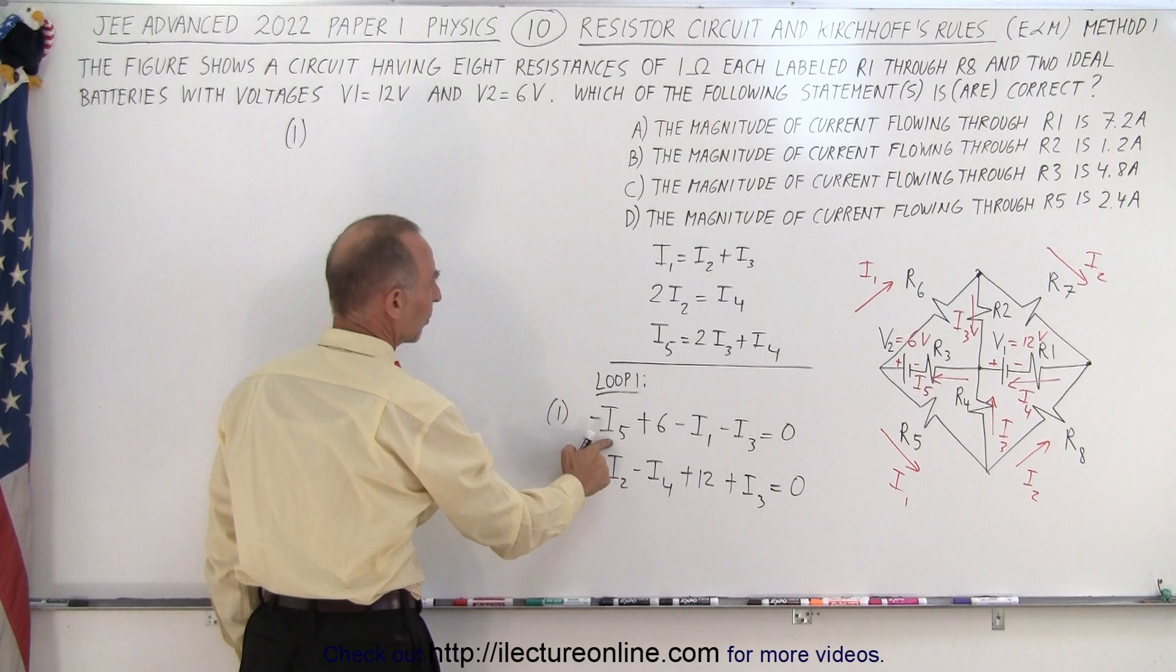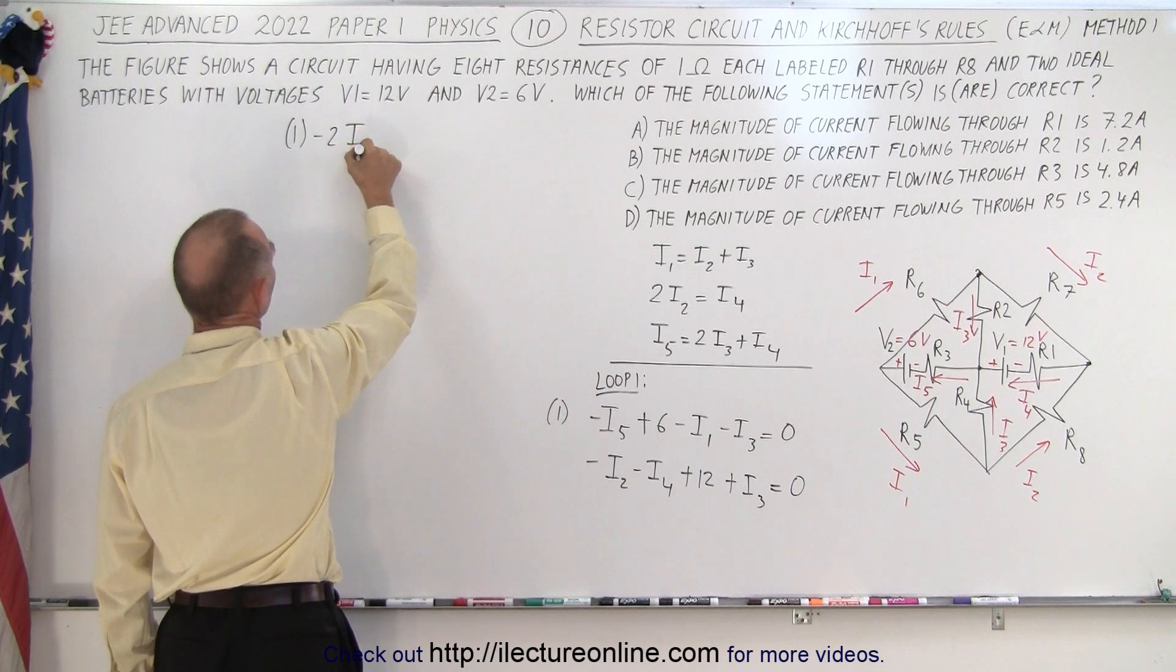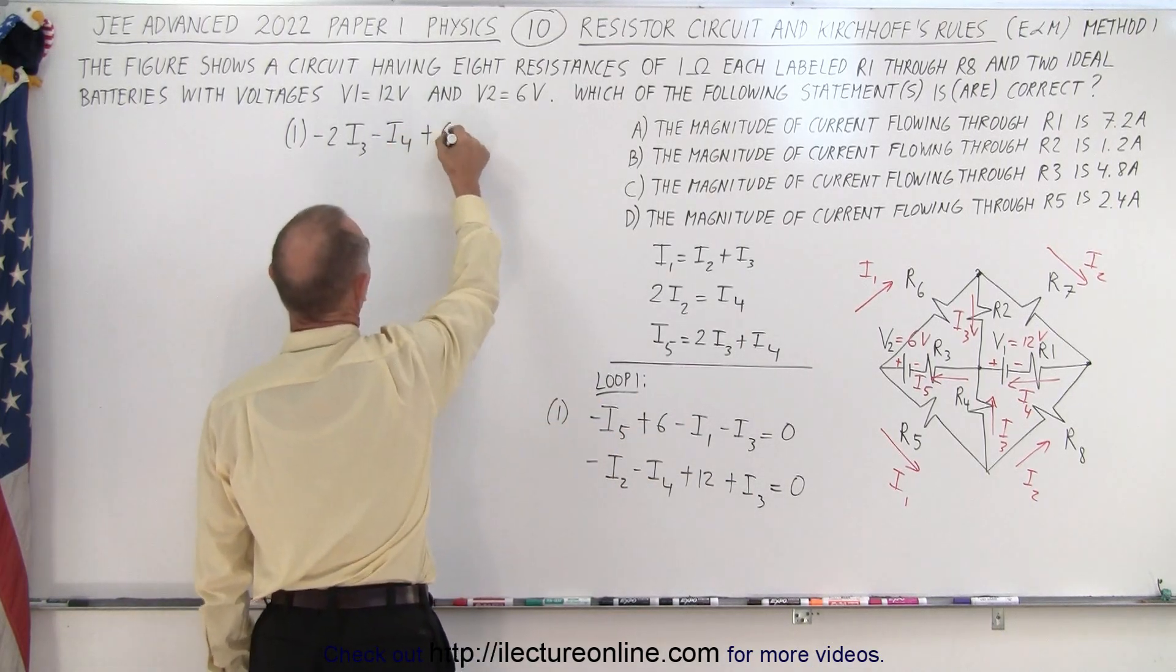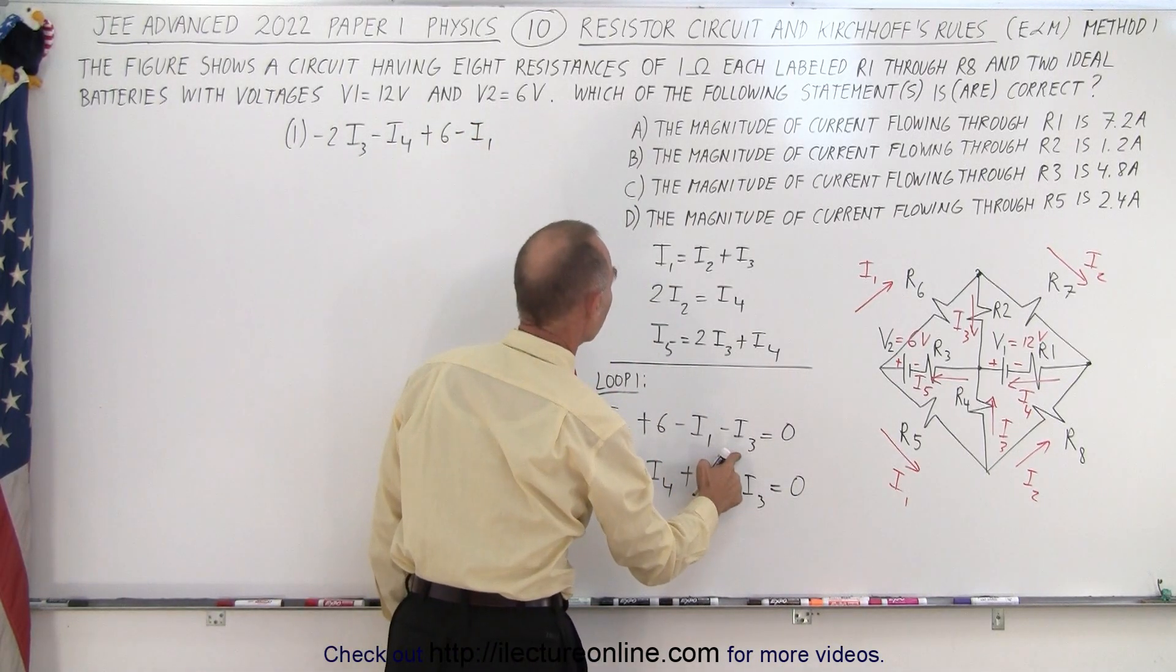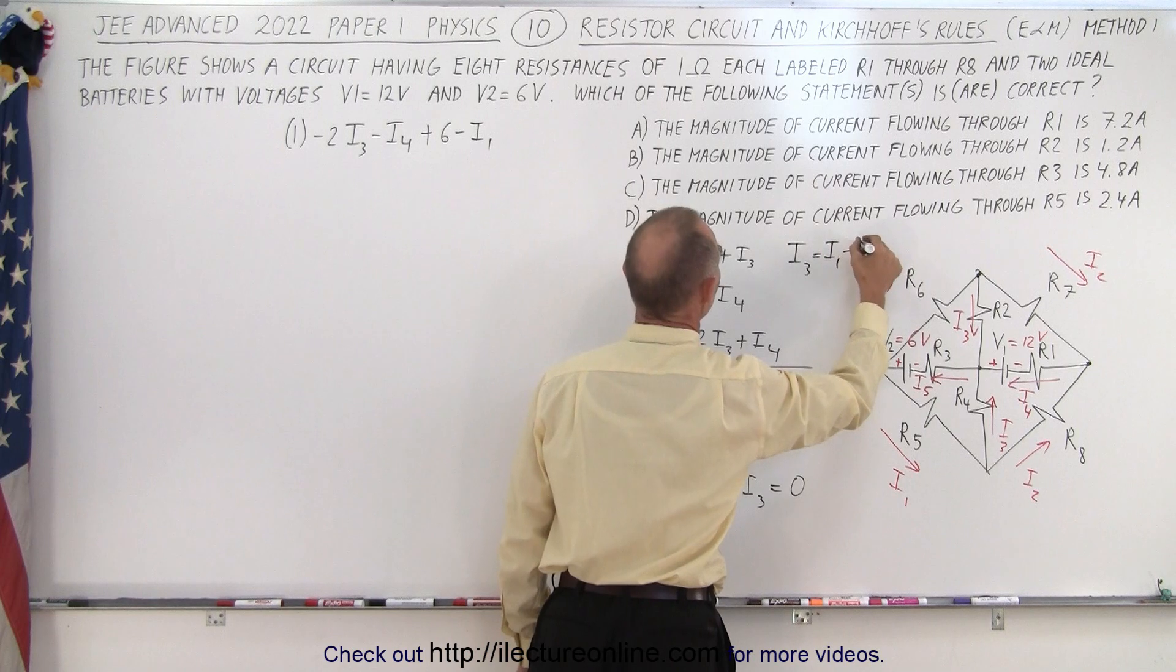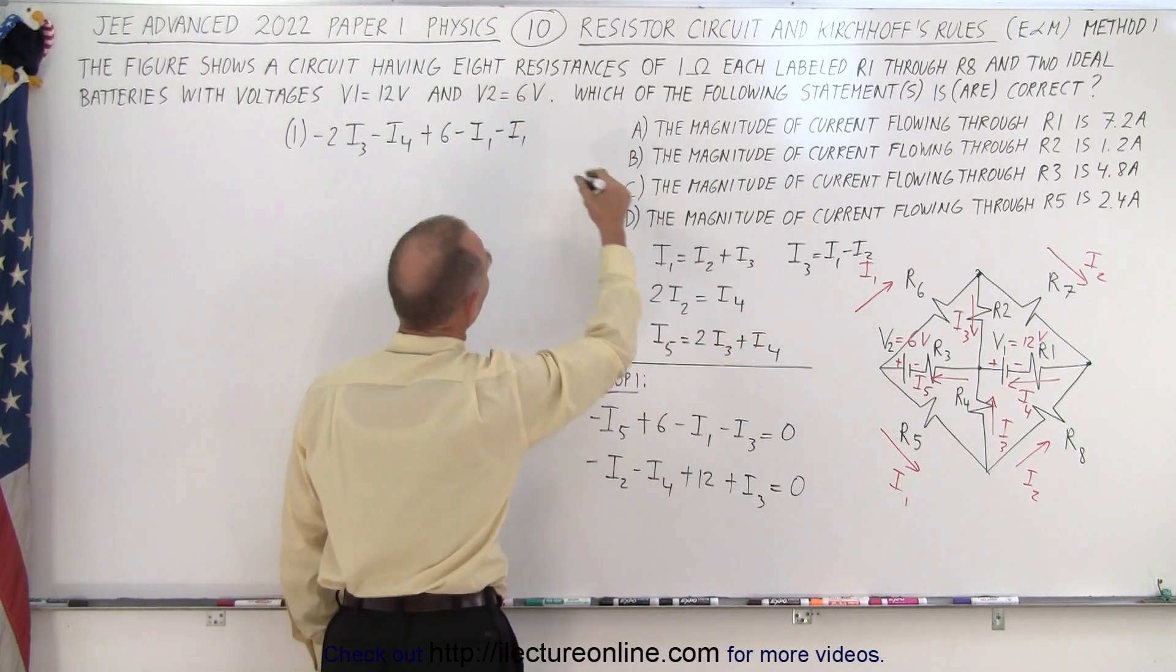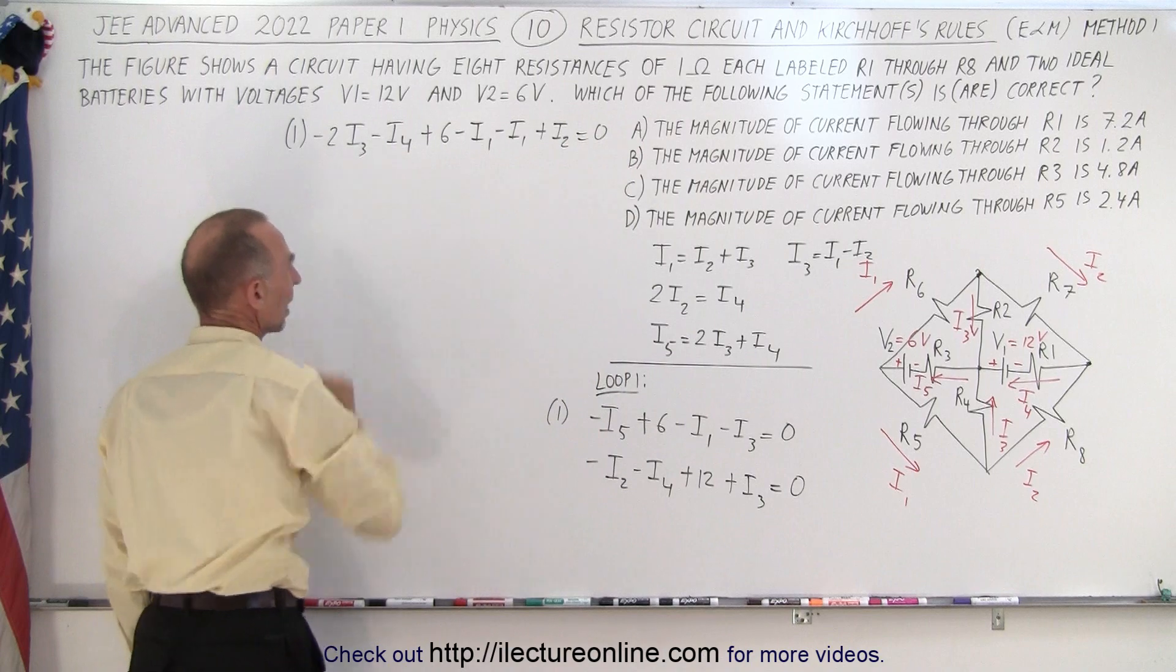And minus I5 can be replaced by minus 2I3. That would be minus 2I3 and minus I4 plus 6, minus I1. We'll keep that one. And minus I3 here. We can say that I3 is equal to I1 minus I2. Solving that for I3. So minus I3 is the negative of that. That would be minus I1 and minus I is the minus or plus I2. And all that added together should equal zero. We're not there yet because we still have an I3 and an I4.